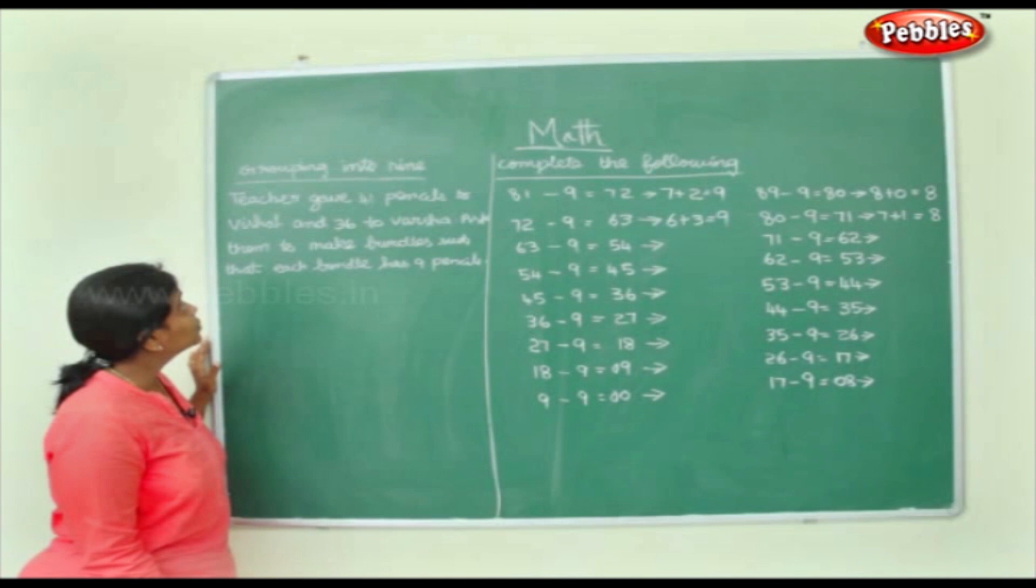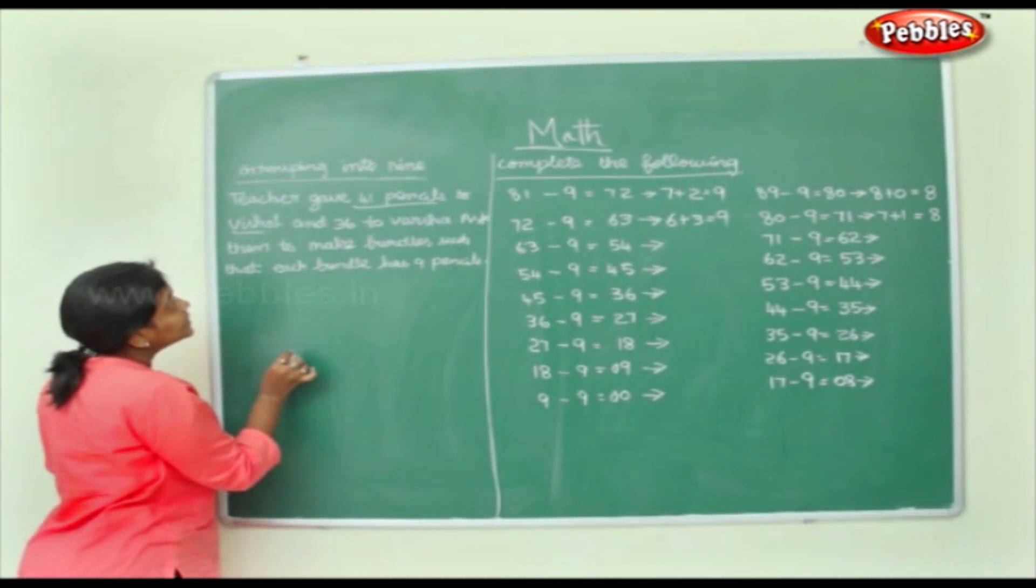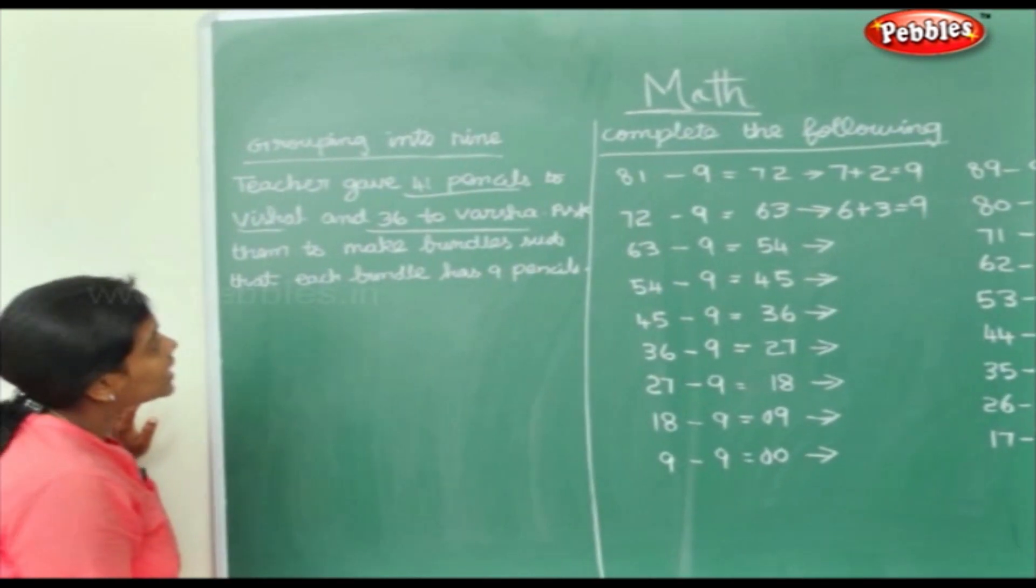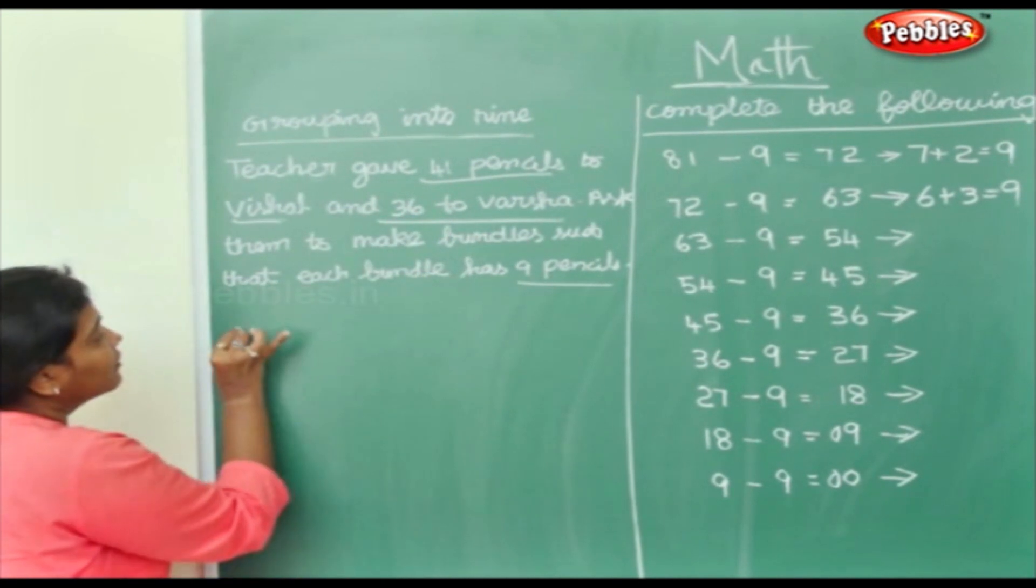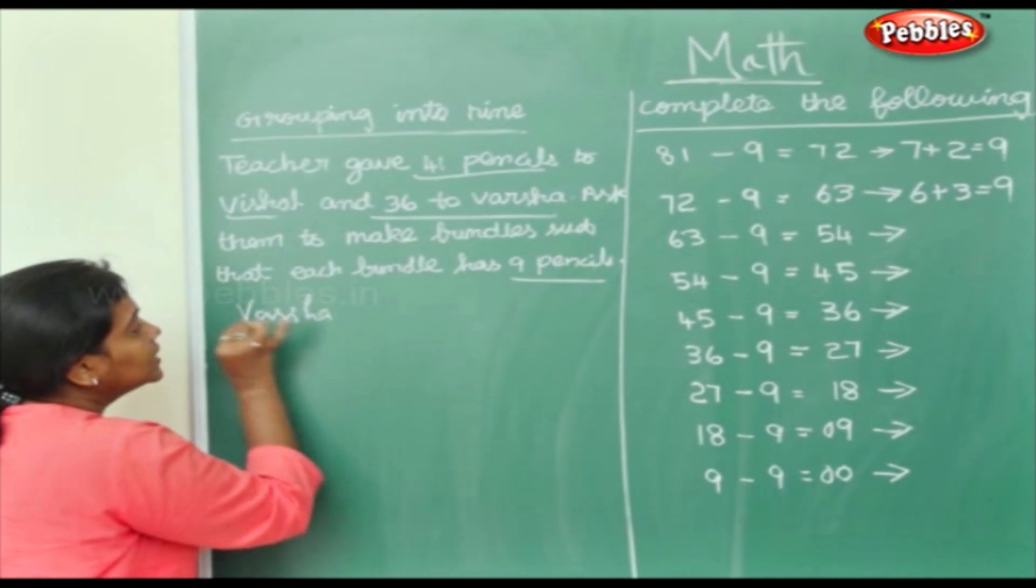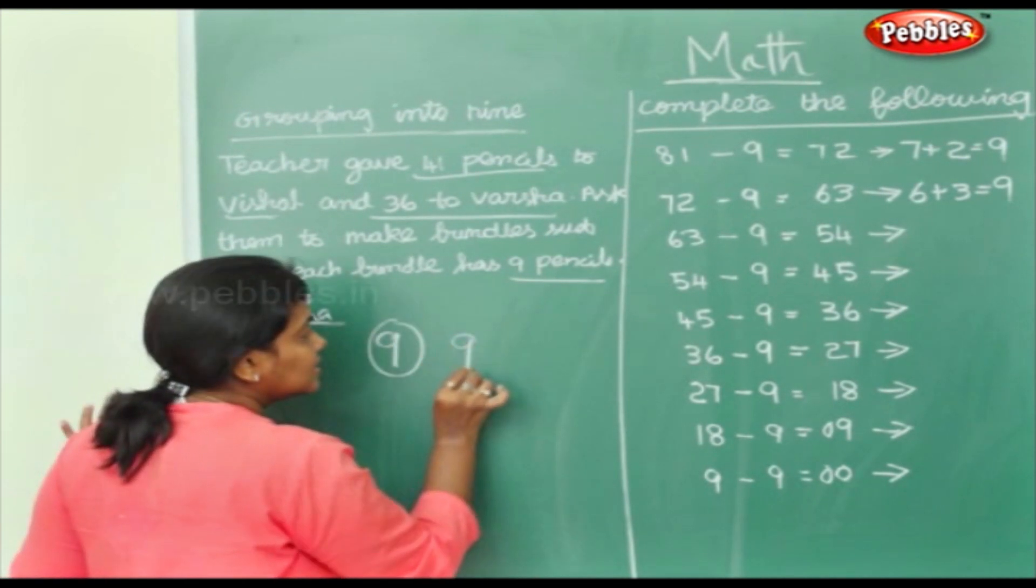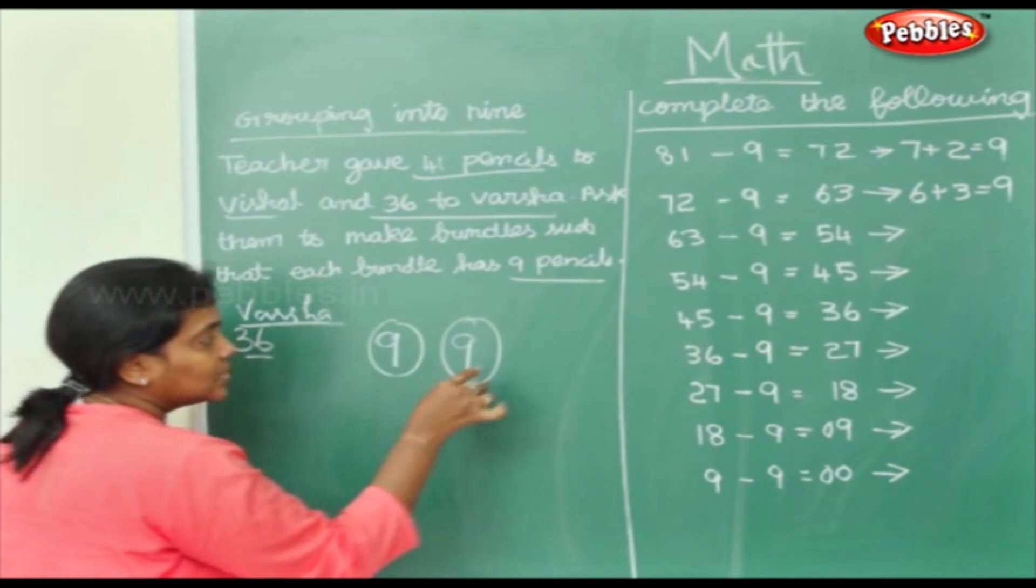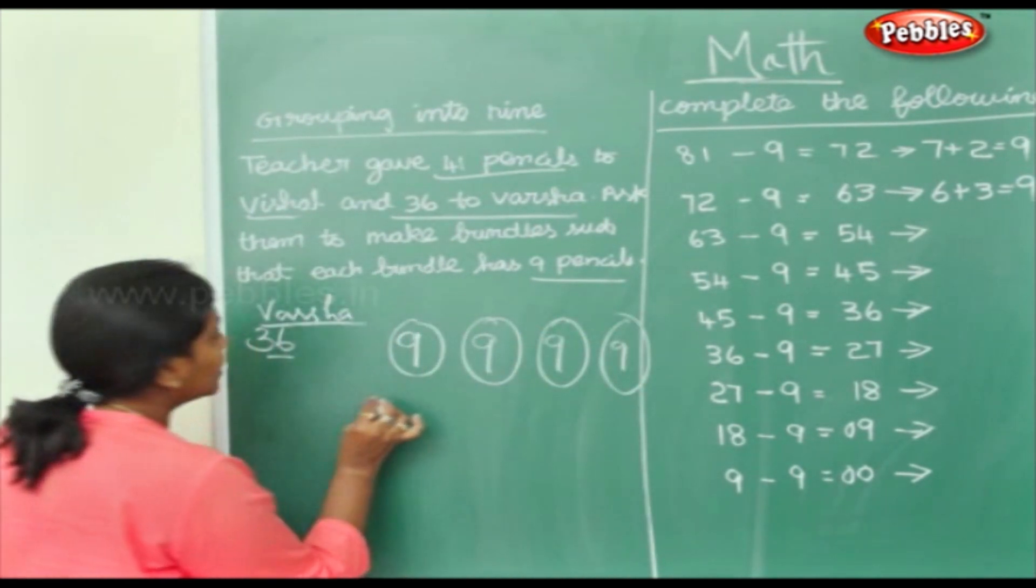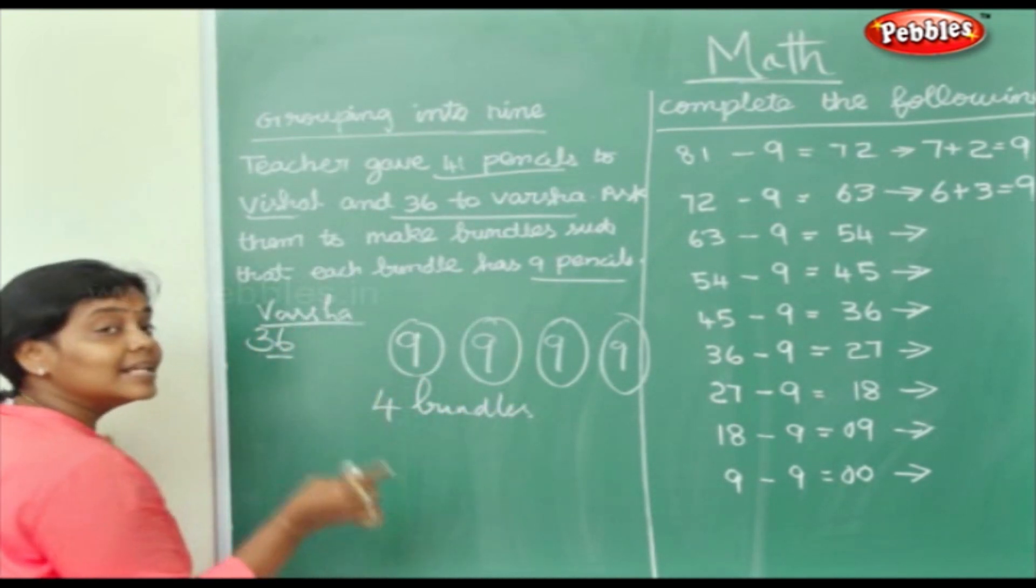Now, let us do grouping in 9's. Teacher gave 41 pencils to Vishal and 36 to Varsha. Ask them to make bundles such that each bundle has 9 pencils. So let's take Varsha. Varsha has got 36 pencils. She has to make bundles in 9. So 1 nine she can make, 2 9's. 9 1's are 9, 9 2's are 18, 9 3's are 27, 9 4's are 36. So Varsha can make 4 bundles using 9 pencils in each bundle.